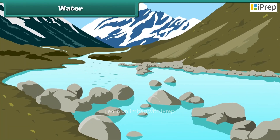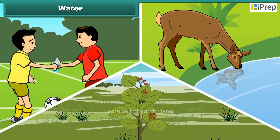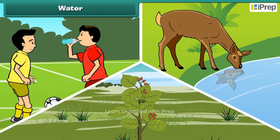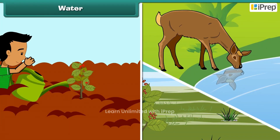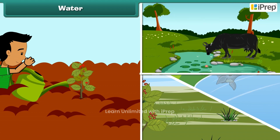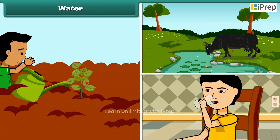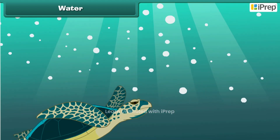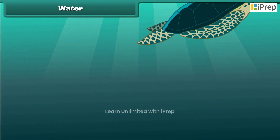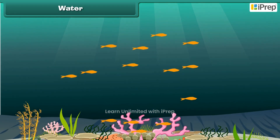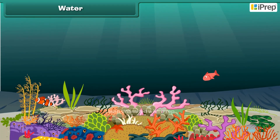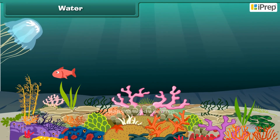Water is essential for the survival of all living things. Plants, animals and human beings need water. It is said that life first appeared in water.